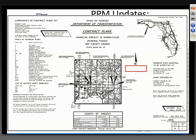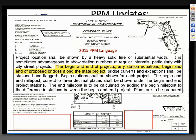Another thing to note is flagging the limits of bridges. In the 2015 PPM, the language told us to station and flag the begin and end of proposed bridges. We questioned why this was only required for proposed bridges and not all bridges. Now the language is more clear and tells us to flag and station the begin and end limits of bridges and bridge culverts. If an existing structure is being replaced, we need to label the proposed structure rather than the existing structure.